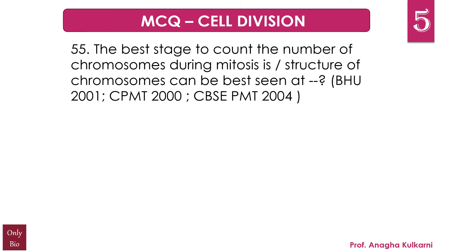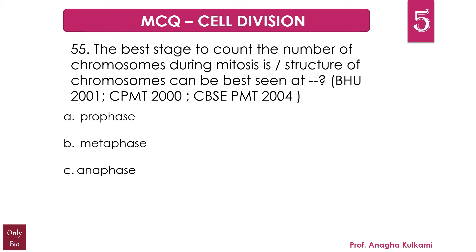Question number 55: The best stage to count the number of chromosomes during mitosis is — or, the structure of chromosomes can be best seen at — A. Prophase, B. Metaphase, C. Anaphase, D. Telophase. The correct answer is B, Metaphase. Friends, remember, metaphase is the best stage to study chromosomes because they are present in a condensed, bivalent form organized on the equatorial region, making them clearly visible and distinct.